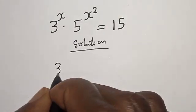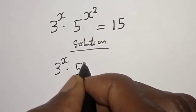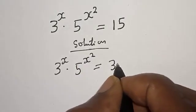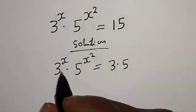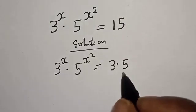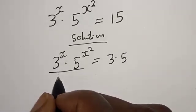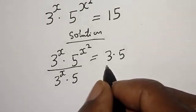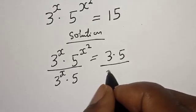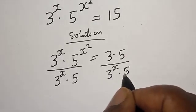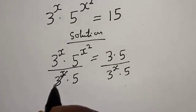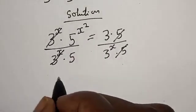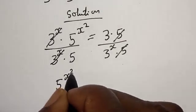We have 3 raised to power s multiplied by 5 raised to power s squared is equal to 15, which is 3 multiplied by 5. Now let's divide both sides by 3 raised to power s and 5. This one will cancel this and this one will cancel this.